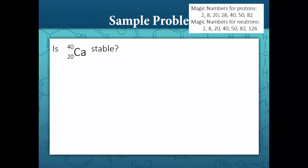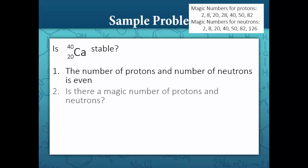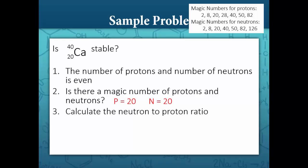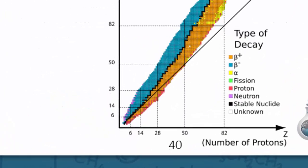Is calcium-40 stable? First, we determine that the number of protons and neutrons is even. Second, calcium-40 has 20 protons, which is a magic number for protons, and 20 neutrons, which is a magic number for neutrons, so we can already see it is stable. Continuing anyway: the neutron-to-proton ratio is 20 to 20, or 1 to 1. Comparing that ratio to the band of stability, we confirm that an isotope with 20 protons and 20 neutrons is indeed stable.